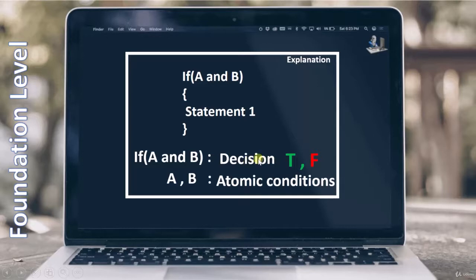Then only we can say that we have covered 100% decision. But if we come to the condition testing, then at one time we have to cover true and false for A, and next time we have to again cover true and false for B. So that way we will cover the atomic condition or condition coverage.